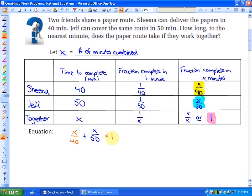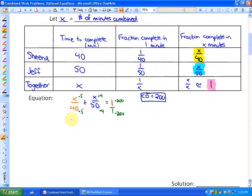This is a rational equation. Our common denominator is 200. We multiply our first rational expression by 5, second by 4, and third by 200. We get 5x/200 plus 4x/200 equals 200/200. After we multiply both sides by 200, that cancels out our common factors, leaving 5x plus 4x equals 200.